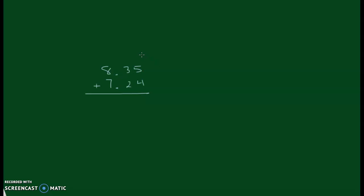Then we start from the right and work our way left just like normal. So 5 plus 4 is 9, 3 plus 2 is 5, and then 8 plus 7 is 15.